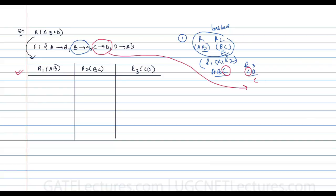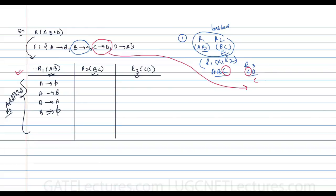Now we need to find what additional functional dependencies are valid for each pair of attributes. For two attributes, the possible non-trivial FDs are: A determines B, B determines A, for R1; B determines C, C determines B, for R2; and so on. We check which of these are valid using the original functional dependencies.